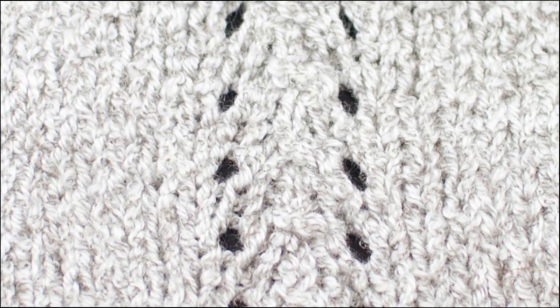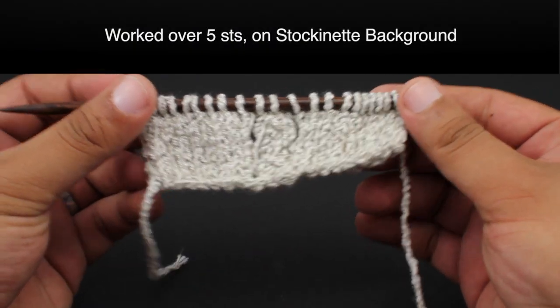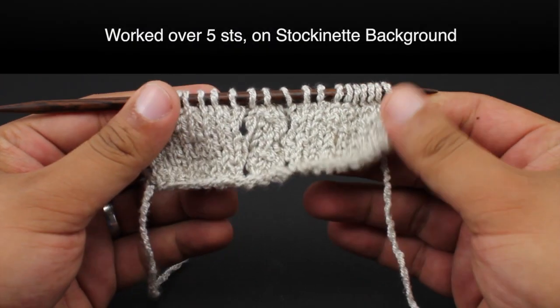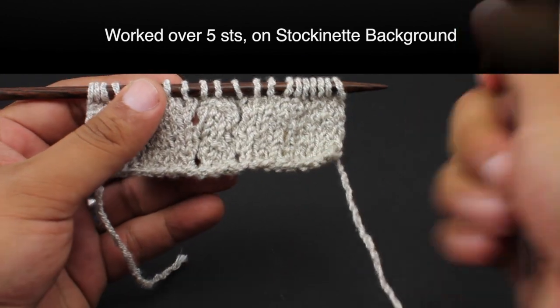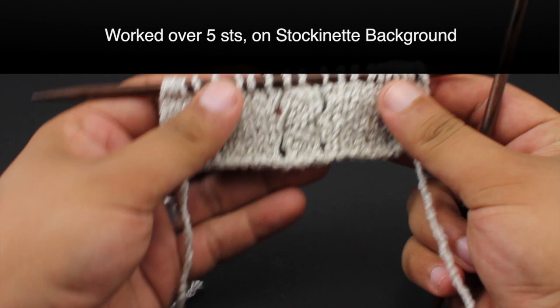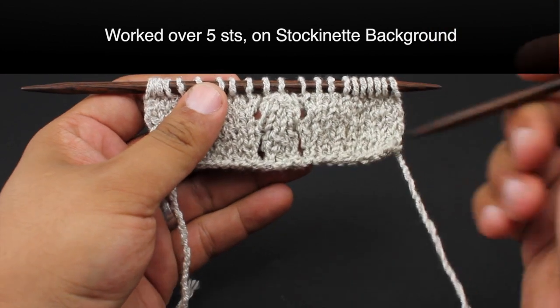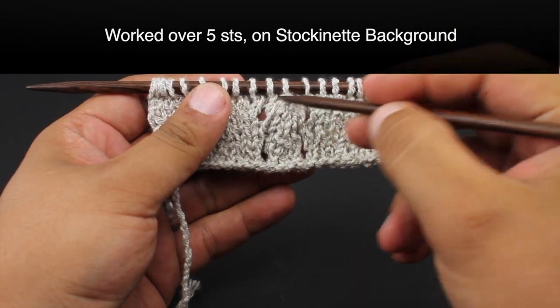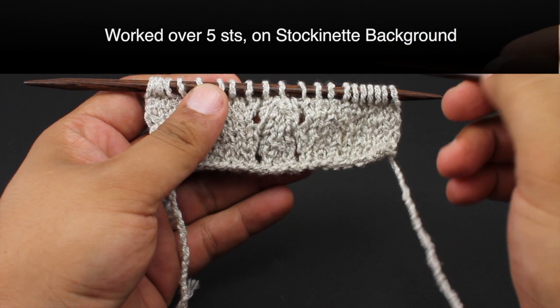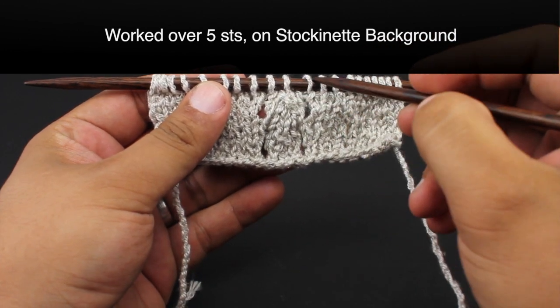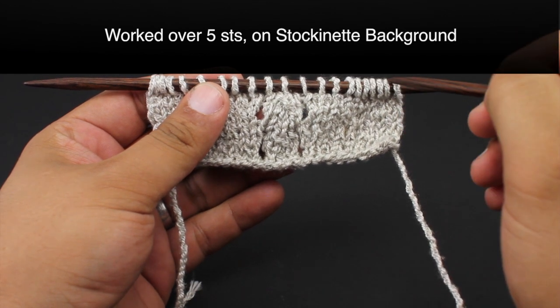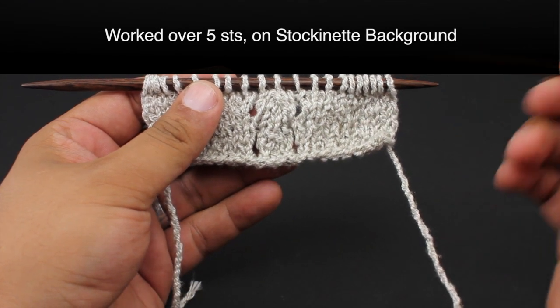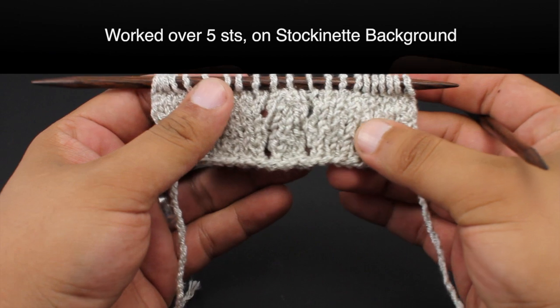This stitch is worked over five stitches on a background of stockinette. This is a panel stitch. We are only going to be covering the five stitches that it is worked over, not the stockinette background. If you don't know how to do stockinette, you can check out the tutorial on our website.